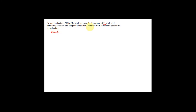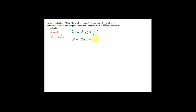In an examination, 75% of students passed. If a sample of 12 students is randomly selected, n = 12, find the probability that 8 students from the sample passed. First, recognize that this is a binomial distribution because there are two outcomes: passed or failed the examination. The probability of passing equals 75%, which is 0.75. So x is binomial with n = 12 and p = 0.75.